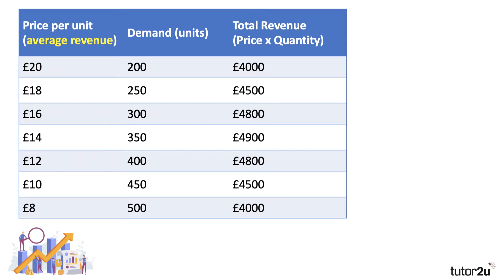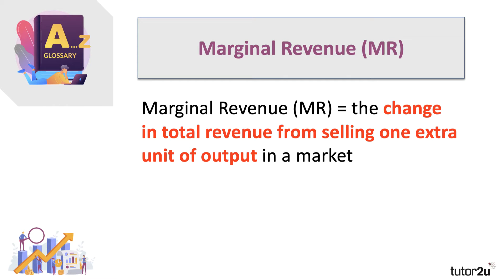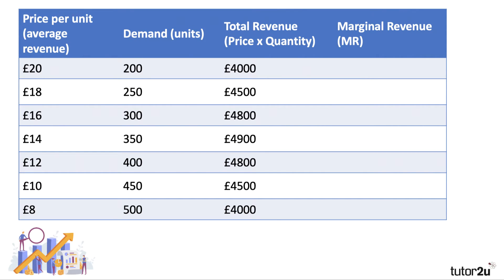The third concept in this video is marginal revenue. What is marginal revenue? It's the change in a firm's total revenue from selling one extra unit of a good or service in a market — if you sell one extra unit, what's the impact on total revenue? Going back to our table: we're cutting the price by two pounds per unit and demand is going up by 50 units. When we cut the price from 20 to 18, our revenue goes up by 500 pounds. We've sold an extra 50 units, so we're getting 10 extra pounds per extra unit sold.